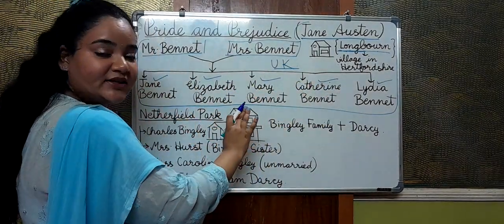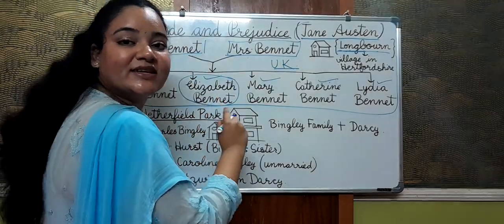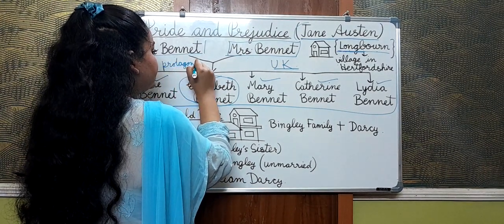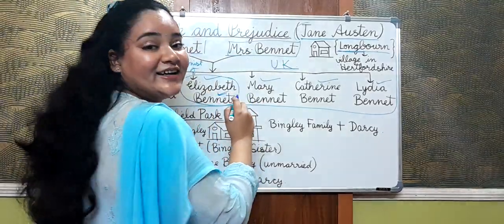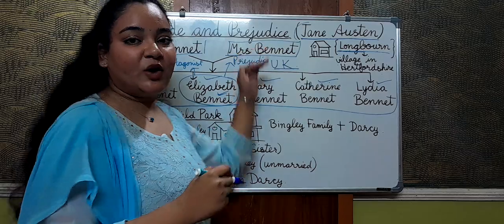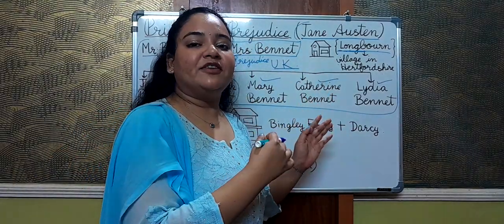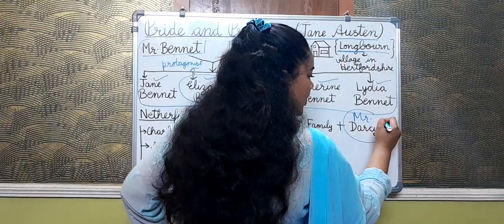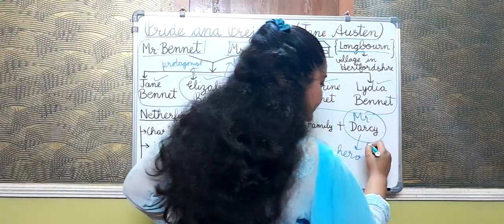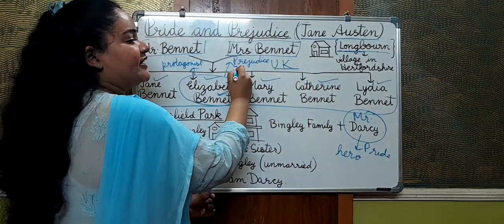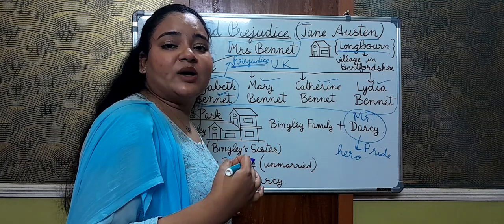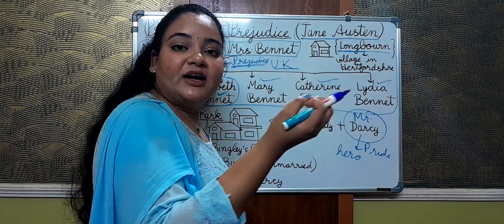Among these five daughters, you just have to remember that the protagonist is Elizabeth Bennet — she is the heroine of the novel. One important fact about Elizabeth Bennet is that she represents the word 'prejudice.' And if you have even casually browsed through the novel, you know that Mr. Darcy is the hero. Mr. Darcy represents 'pride,' and Elizabeth Bennet represents 'prejudice' — which means preconceived notions we develop about someone without properly knowing them.